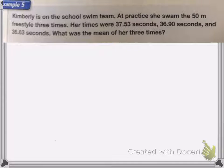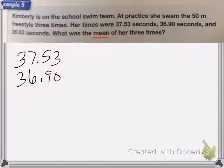The last one has to deal with decimals. So Kimberly is on the school swim team. At practice, she swam the 50 meter freestyle three times. Her times were 37.53 seconds, 36.90 seconds, and 36.63 seconds. What was the mean of her three times? So remember, mean is average. So I'm going to first add up these three amounts, 37.53, 36.90, and 36.63.